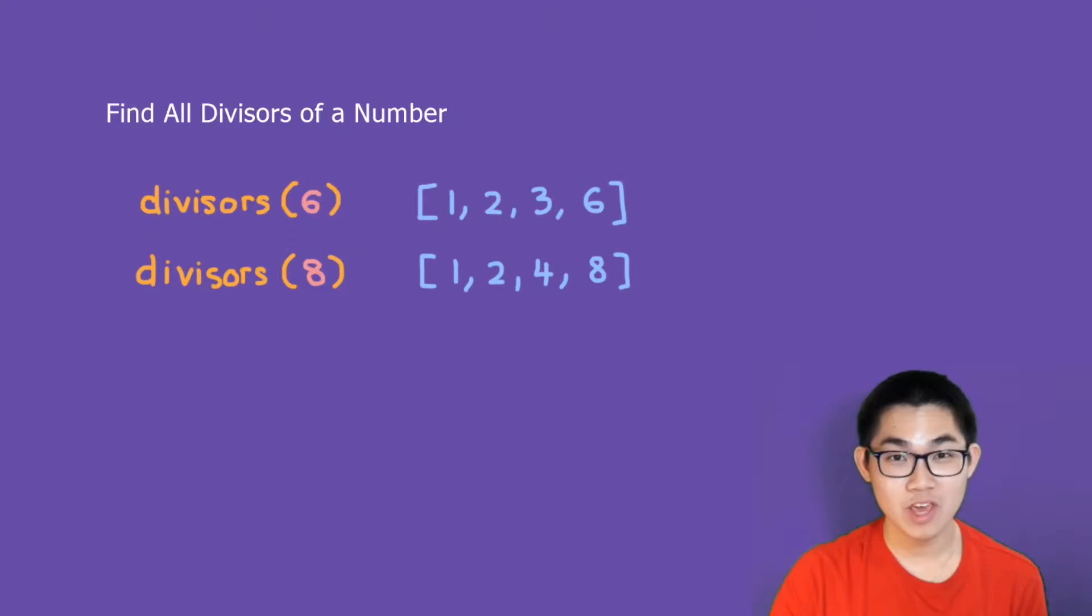For example, if we want to find the divisors of the number 6, then this would produce the list of numbers 1, 2, 3, and 6. When 6 divides these numbers, the remainder is 0.